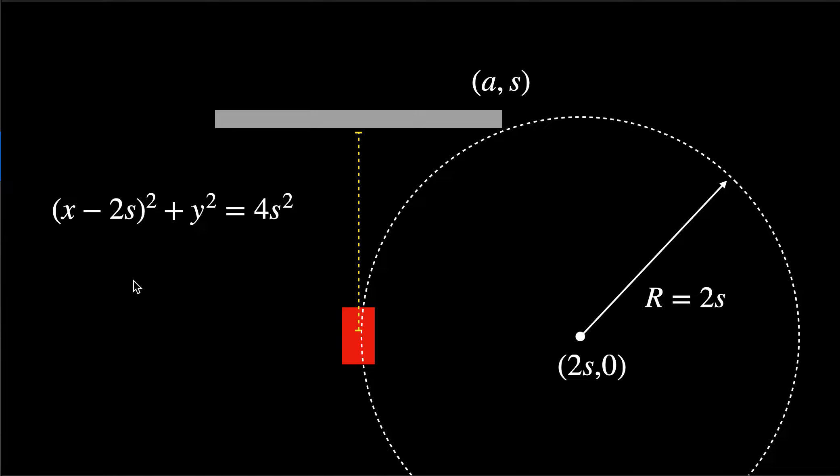I want to show you two things. Here is my expression for the equation of this circle, right? It's (x - 2s)² + y² = R², where x minus the location squared plus y squared equals R squared. And R is 2s, so I get 4s².